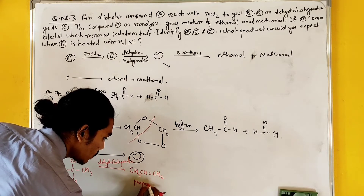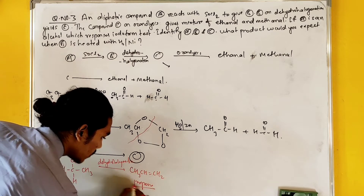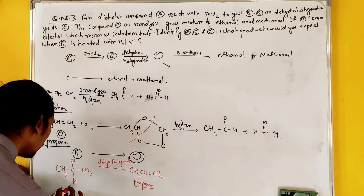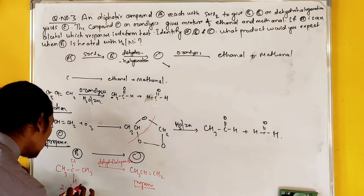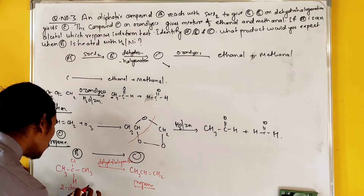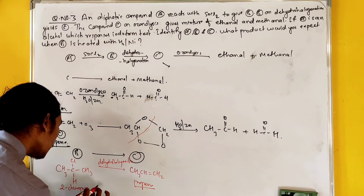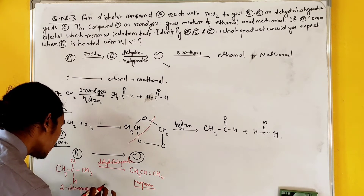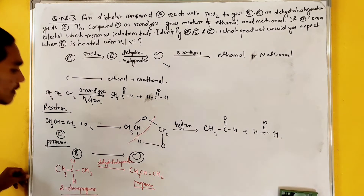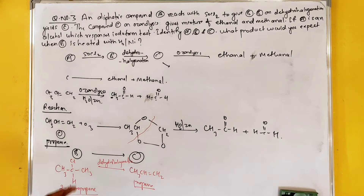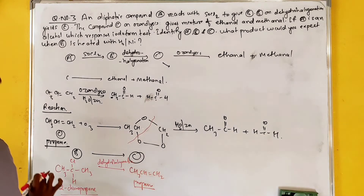So compound C is propene, and compound B is 2-chloropropane. We do dehydrohalogenation and find out compound B.